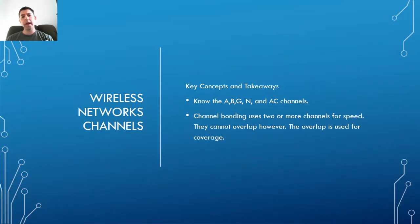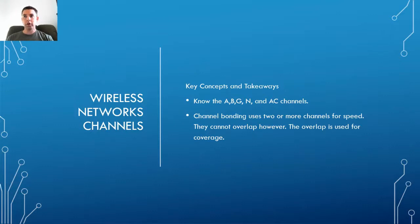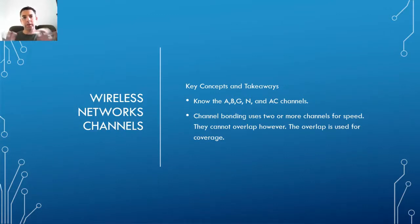You will need to know the A, B, G, N, and AC channels, their speeds, and what frequencies they operate on for the test. Channel bonding uses two or more channels for increased speed, but those channels cannot overlap — they must be several channels apart. Overlap is used for coverage, not bonding. It's like the walkie-talkie scenario: if channels are too close, they step on each other.